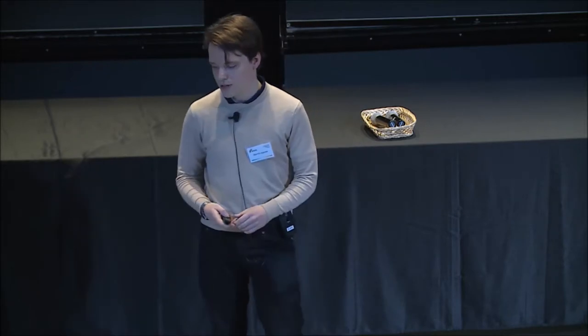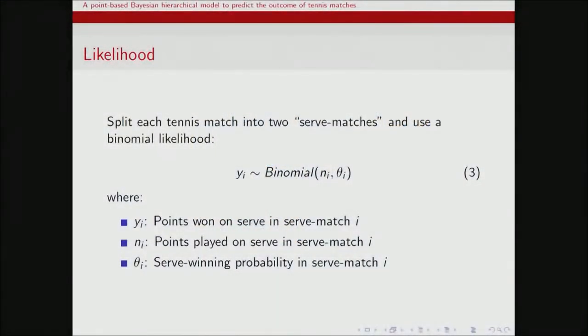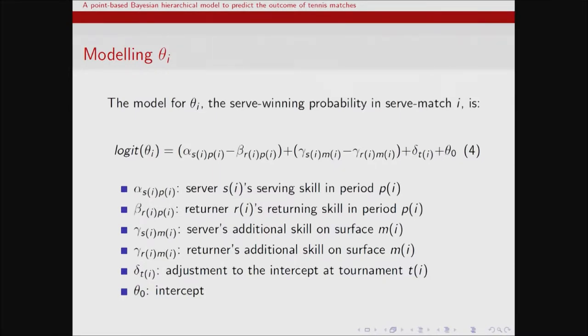The link function is formulated as a binomial. I split each match into two — for each player they serve n times and win y of those points. The link is just this binomial with the probability of winning the point on serve, which is the all-important thing we're trying to estimate. The model has alpha (serve strength) and beta (return strength) — terms similar to Barnett and Clark — then gammas for surface preferences: the server's surface preference minus the returner's for the particular surface. Then we have tournament-specific intercepts reflecting that it might be easier or harder to win a point at particular tournaments. The serve and return skills also have period indices, making them time-dependent.